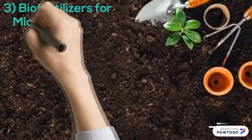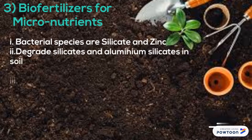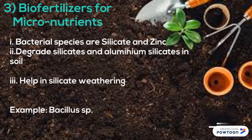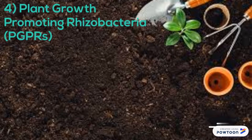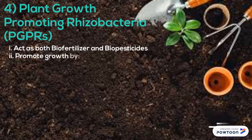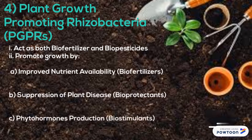Biofertilizers for micronutrients: Bacterial species that solubilize silicate and zinc degrade silicates and aluminium silicates in soil and help in silicate weathering. Example: Bacillus sp. Plant growth promoting rhizobacteria (PGPRs) act as both biofertilizer and biopesticides. They promote growth by improved nutrient availability (biofertilizers), suppression of plant disease (bioprotectants), and phytohormone production (biostimulants). Examples include Pseudomonas sp. and Bacillus sp.